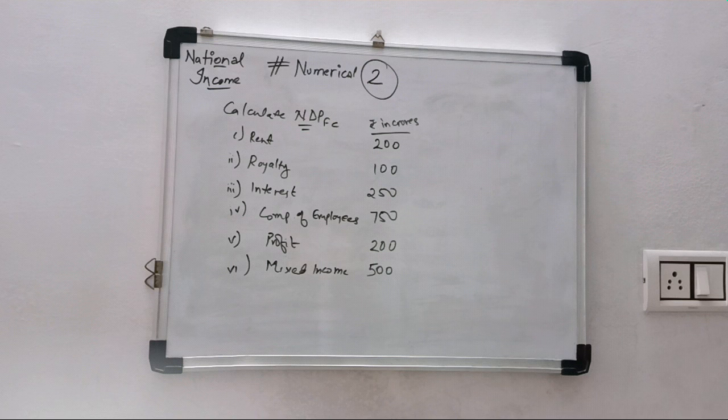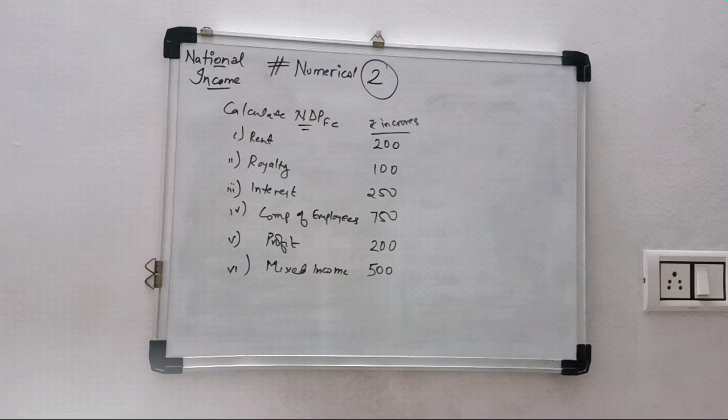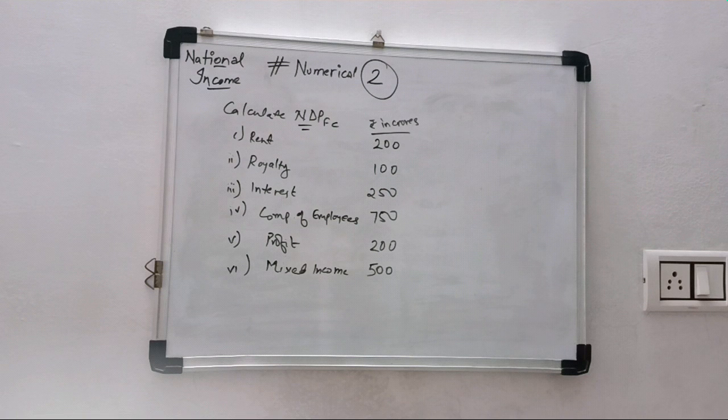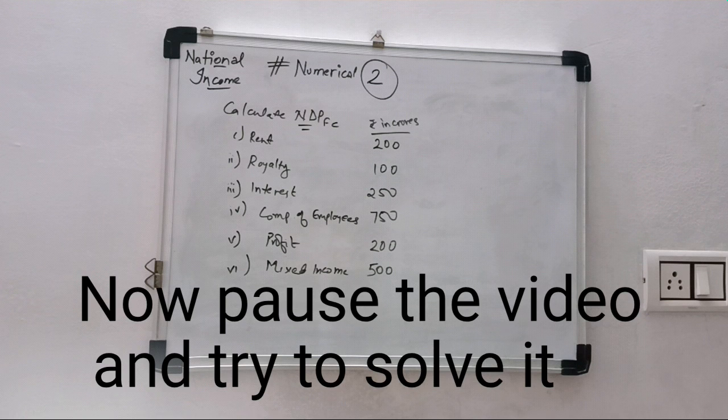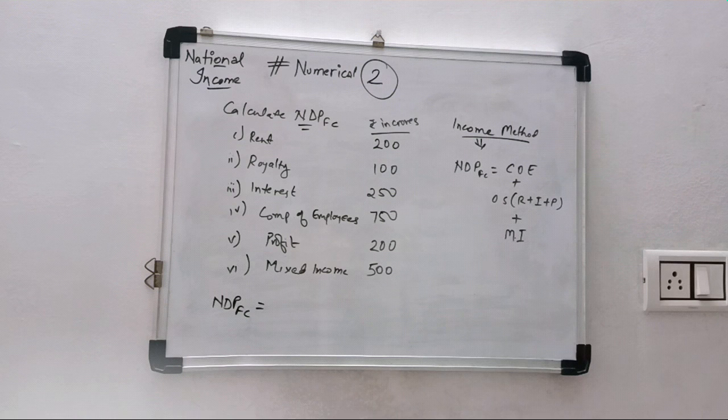Pause the video and then cross check your answer with my answer. Comment if you are right, and if you are wrong, please comment what mistake you have done. So the solution of this numerical will be found from using method income method.